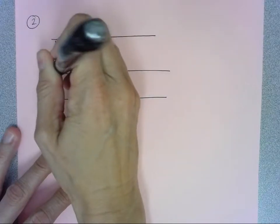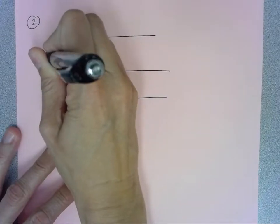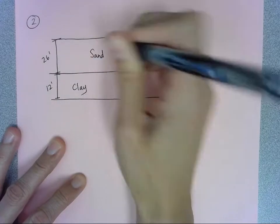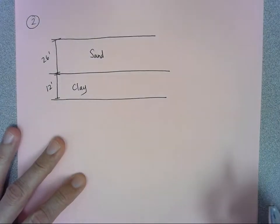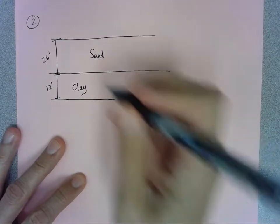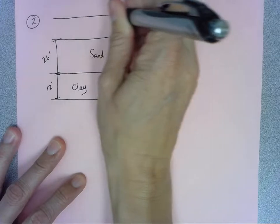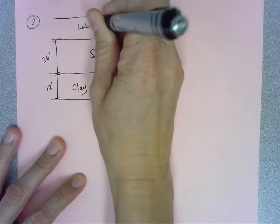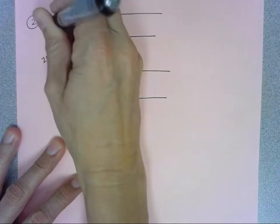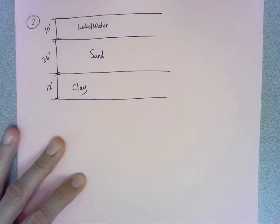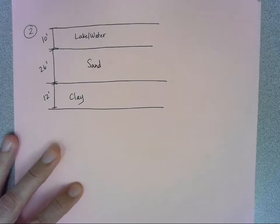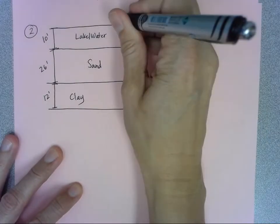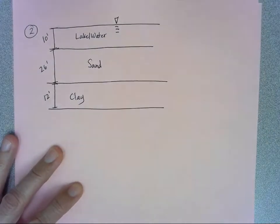The top of the sand is located 10 feet below the surface of a lake, so we've got one more layer here - we'll call this lake or water, and that is 10 feet. That's what our situation looks like when we start off. We know this is water, so there's our water table all the way at the top.